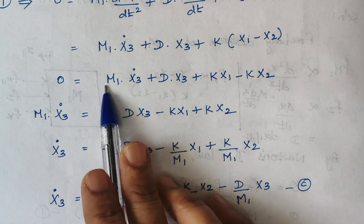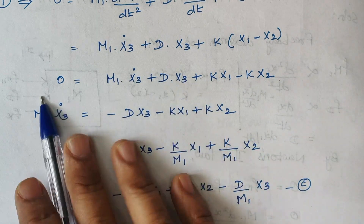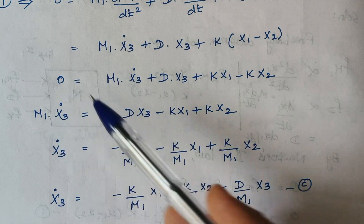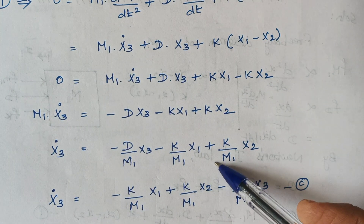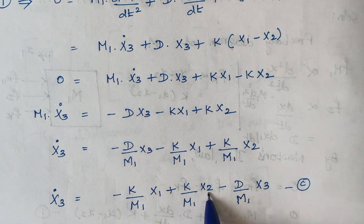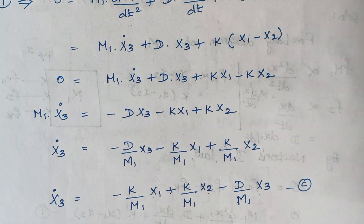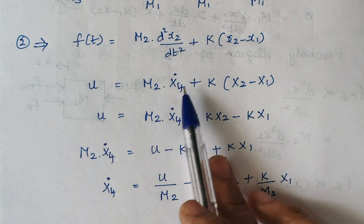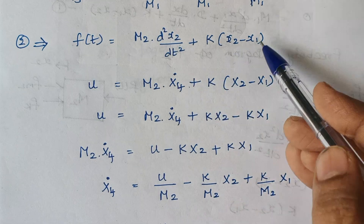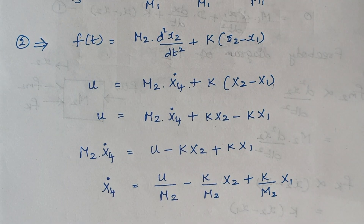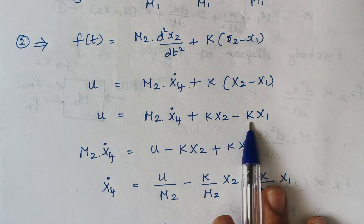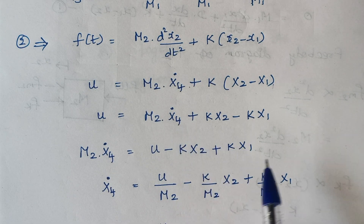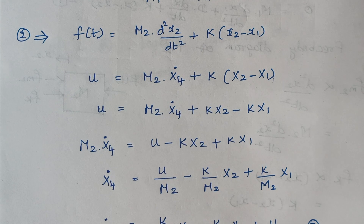We need only ẋ3 on the left-hand side, so move the remaining terms to the left — with a sign change — and shift m1 to the denominator. Arranging in order: first x1, then x2, then x3. Now consider equation number 2, substitute values accordingly: this term becomes ẋ4, and we have k(x2 − x1). From this expression, find ẋ4 by rearranging, and finally we have an expression for ẋ4.